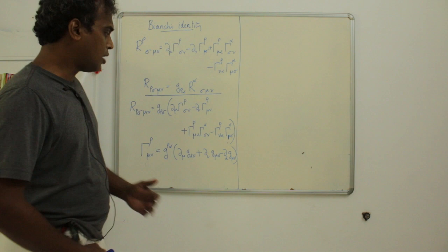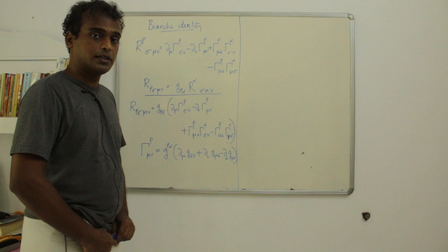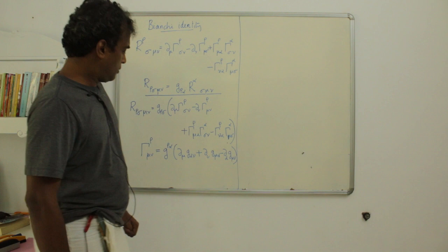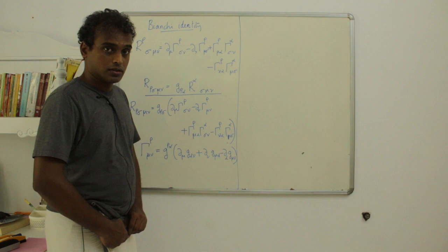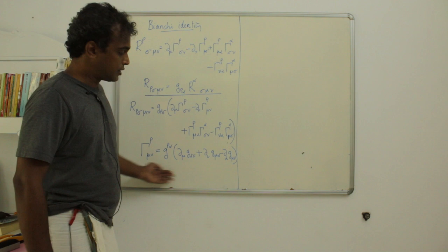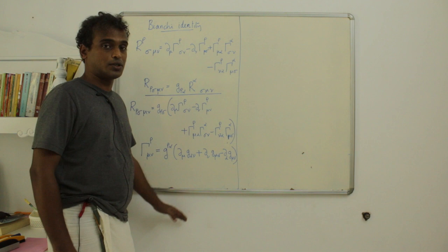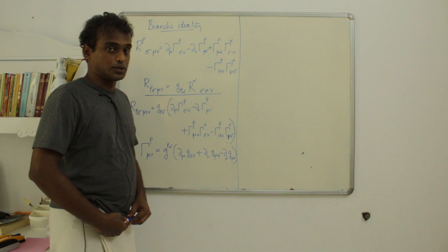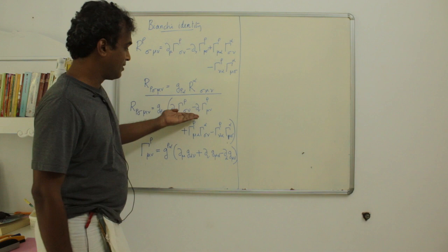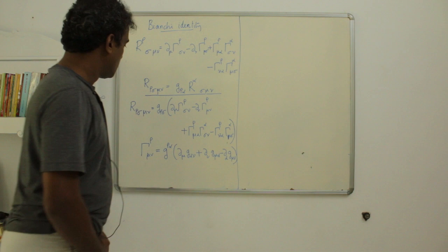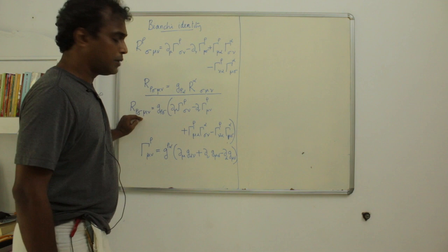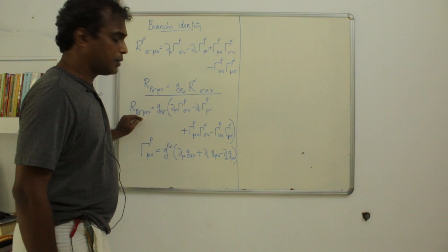Let's now do this exercise in a freely falling frame. A freely falling frame is the one we usually call the locally inertial frame, in which components of the Christoffel connection are always zero. Although the components of the Christoffel connection are zero, it is not necessary that the derivatives of the Christoffel connections are zero. After all, a function being zero does not necessarily mean that its derivative is also zero at a point. So let us evaluate the components of the Riemann tensor in a locally inertial frame, or a freely falling frame as we call it.